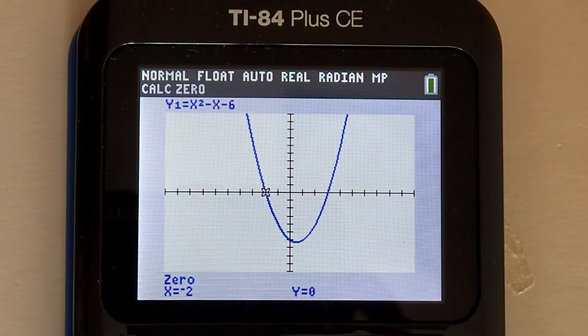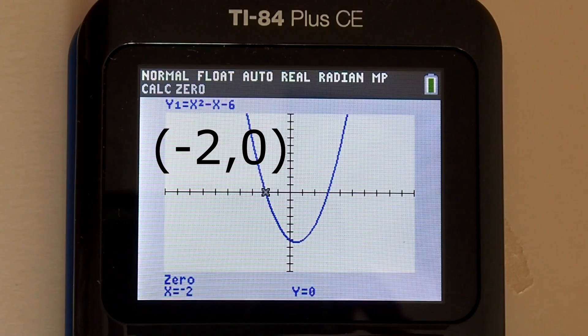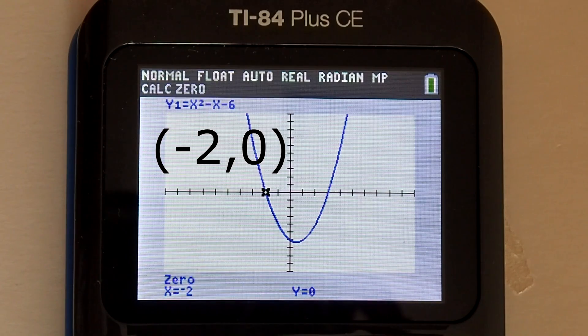And at the bottom of the screen we see our answer. One of the x intercepts is at x equals negative 2, y equals 0. Or negative 2 comma 0.